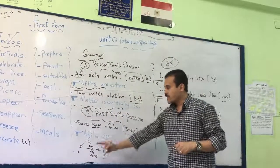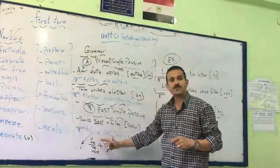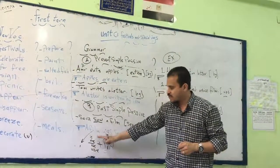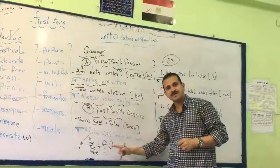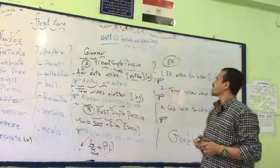So the rule: begin with the object, number one. Two: in the present, we will use is or are. In the past, we will use was or were. Then the past participle.